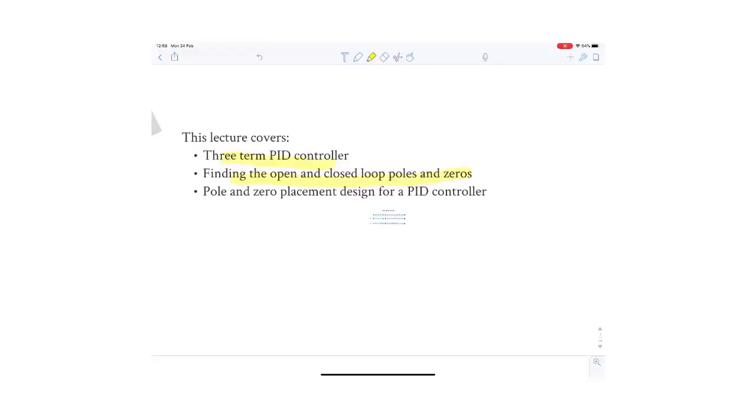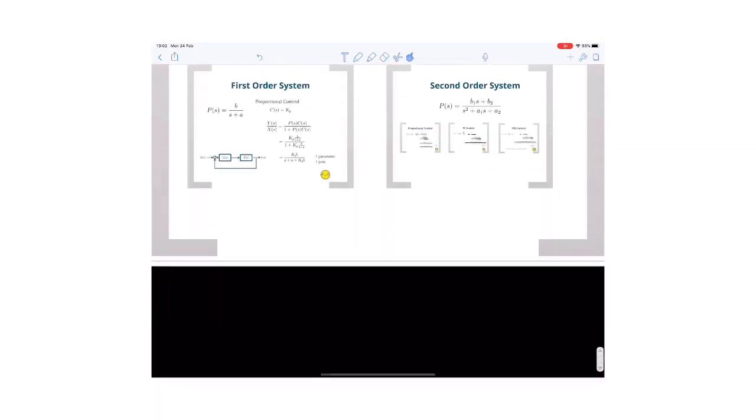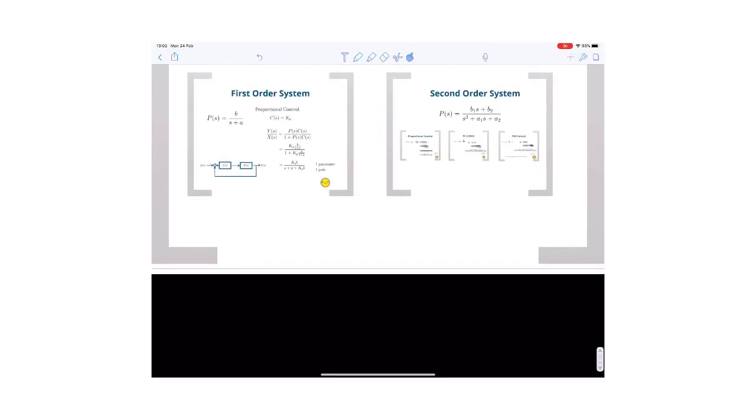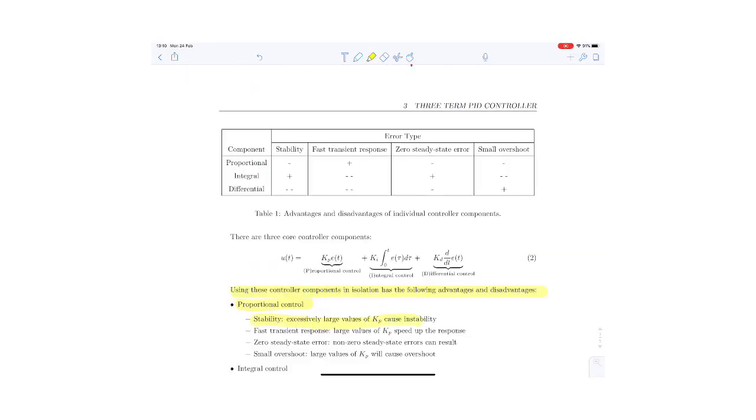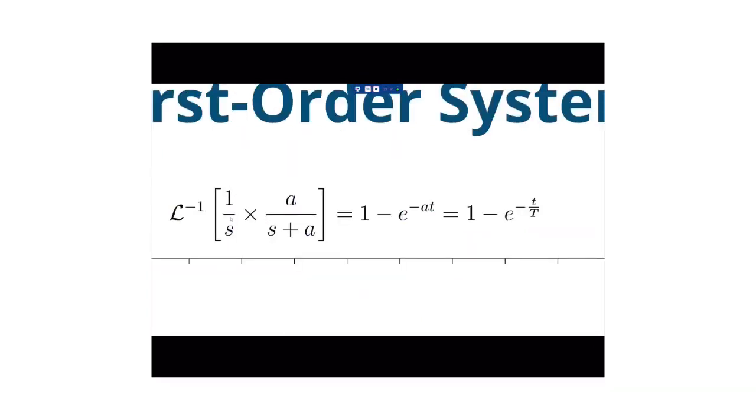The poles and the zeros. We looked at how to solve for the time response, and we looked at how to assume that we're always interested in something we can approximate as being a first-order or a second-order system. Apply the input, take the inverse Laplace transform, and you get 1 minus e to the minus at.